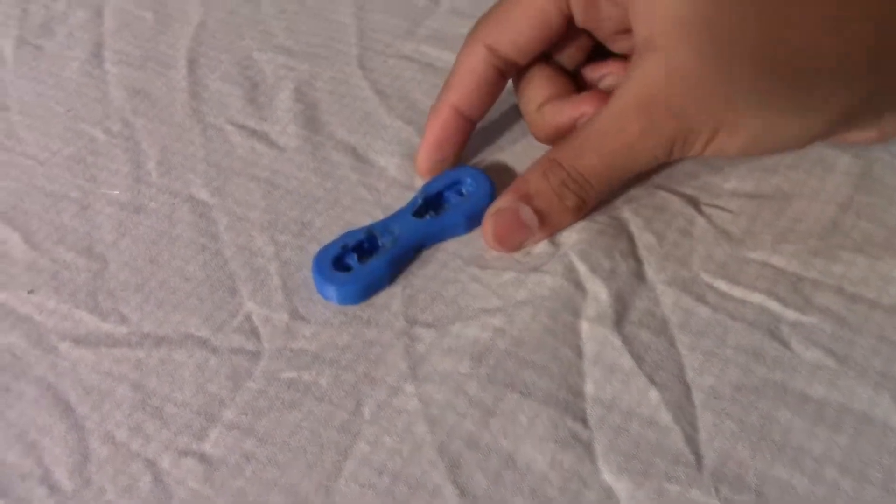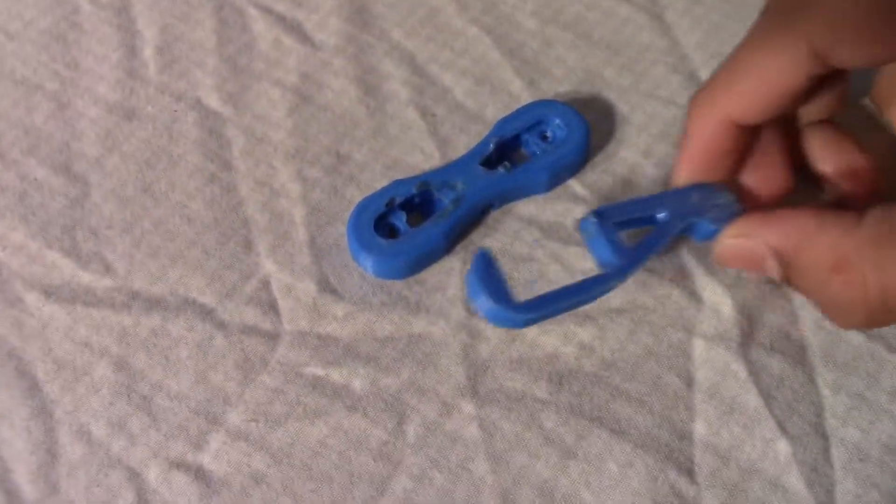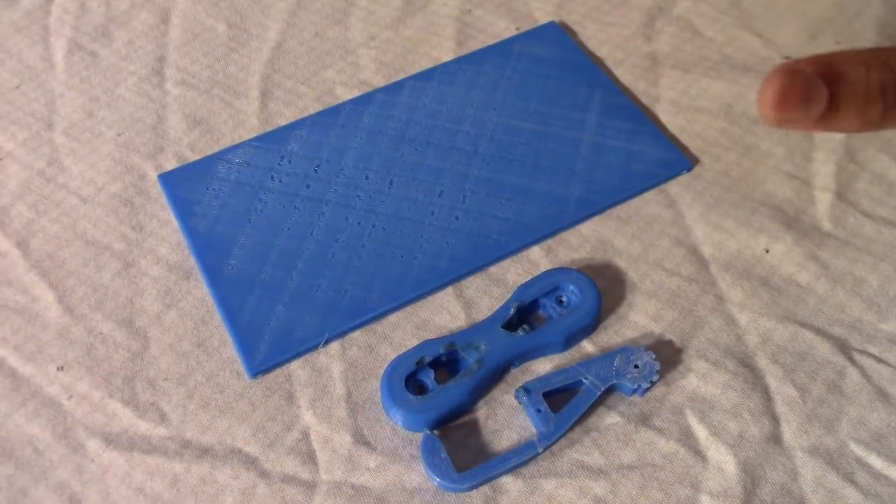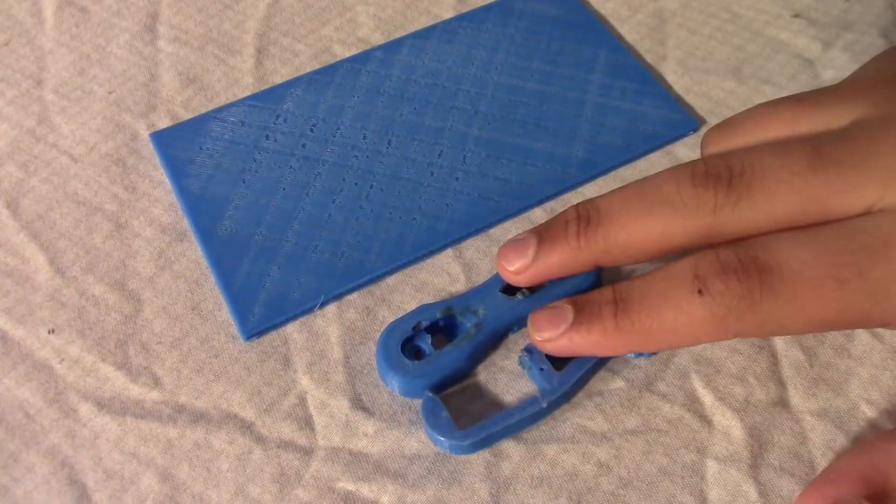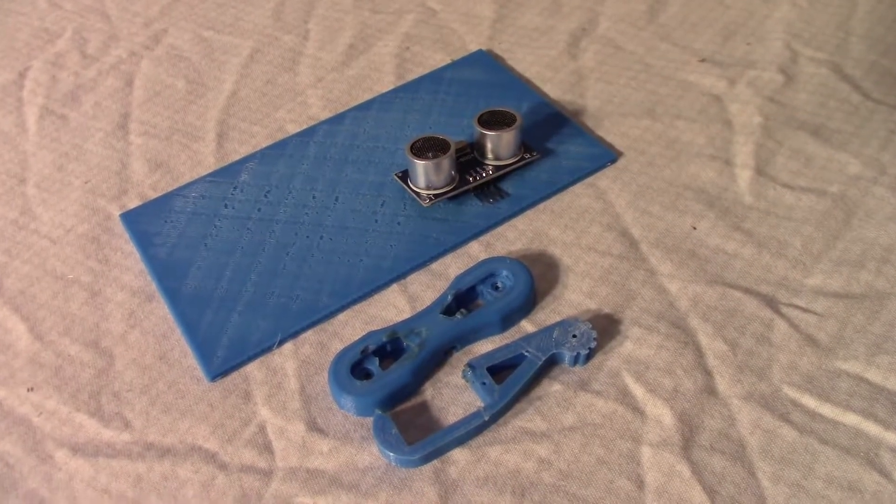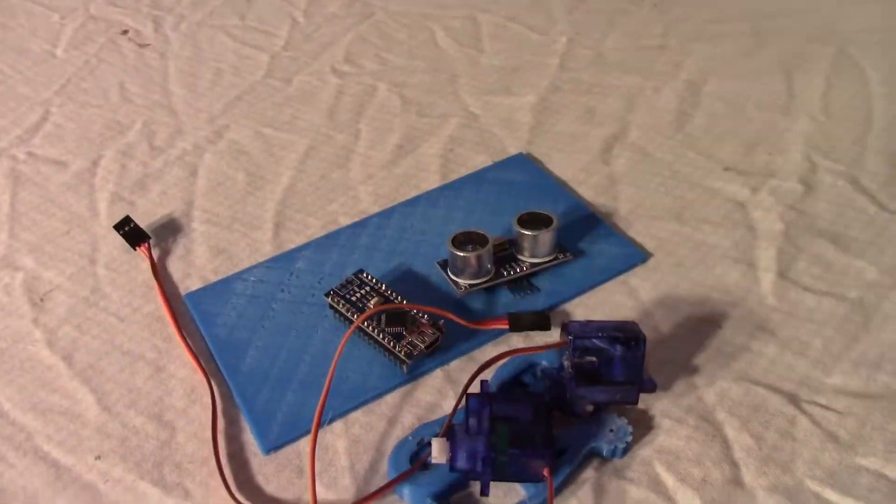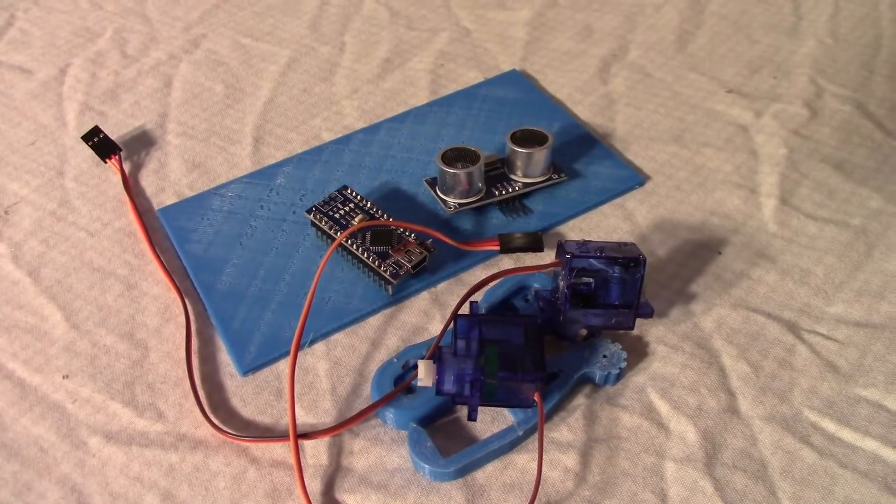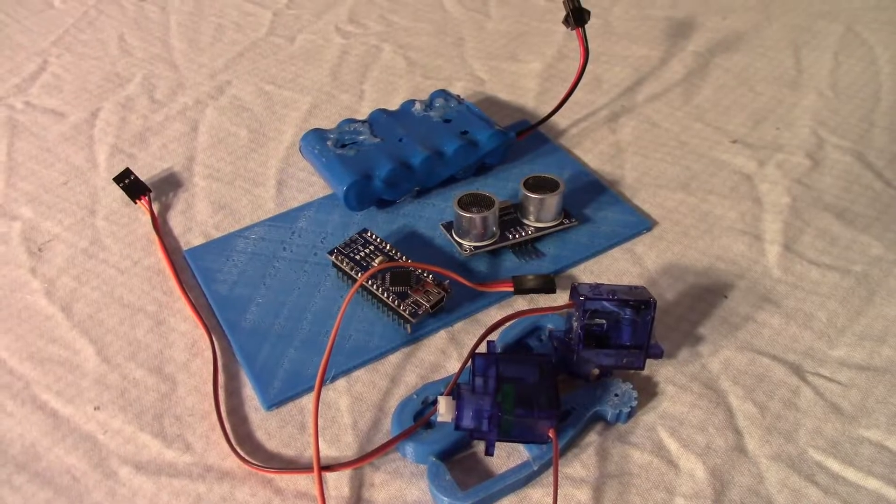Things you need: We'll start off with the 3D printed things. You'll need four of these, four of these, and one of this. This is the body. This is the 3D printed pieces for one foot. You'll need an ultrasonic sensor, an Arduino Nano, two servo motors for each leg which is eight servo motors in total, and a 6 volt battery. It can be any type of battery above 5 volts.